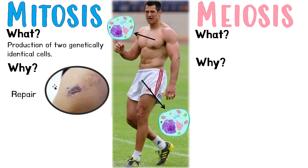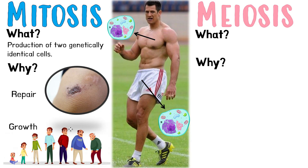Because of mitosis, we can repair our bodies when we lose some cells and need to recover them. Another key use of mitosis is growth. Once upon a time, this rugby player was a small baby. As he grew up, it's not his cells that get bigger — it's the number of cells that increases. He physically has more and more cells as he gets bigger, not bigger cells, just more of them. That is also thanks to mitosis. So the two key reasons mitosis is important are repair and growth.